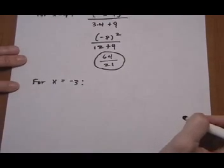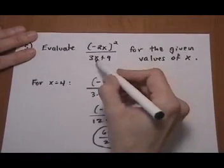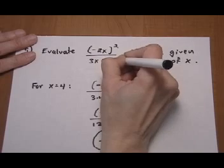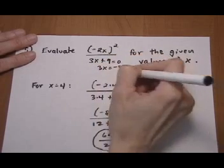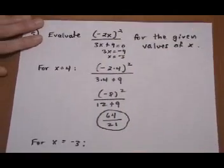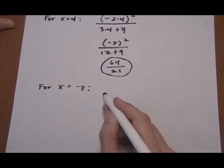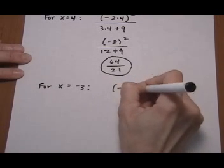Next one, x equals minus 3. Now if we look back up here to the original expression, 3x plus 9, if that equals zero, 3x equals minus 9, or x equals minus 3. So we're going to expect this one, because we're putting in x equals minus 3, to come out with a zero denominator, which means it will be an undefined expression. Let's go ahead and see if that happens.